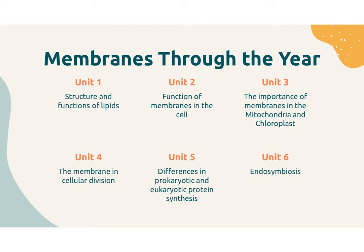In unit one, our macromolecule unit, this is where we are going to talk about the structure and the function of lipids, which is what membranes are made out of. In unit two, we are going to talk about the functions of membranes in the cell — both your cell membrane and the membranes of your other organelles. In unit three, we're going to go into even more detail on the membranes of organelles, specifically the mitochondria and the chloroplast, and talk about the importance that membranes play in those processes.